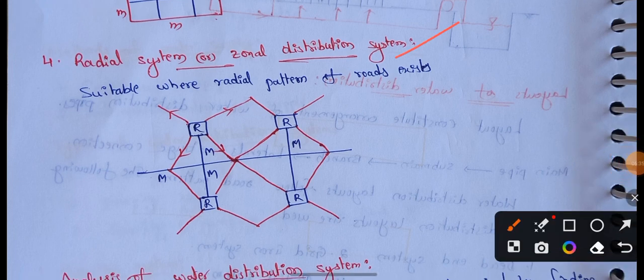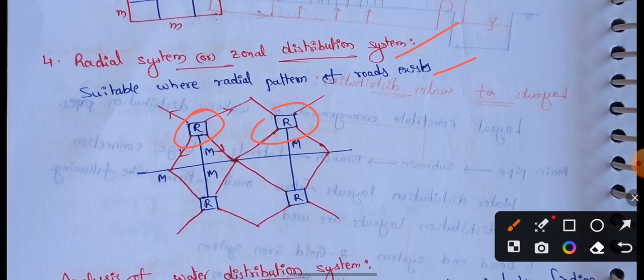Fourth, the radial system. This is used where radial patterns of roads exist. The area is divided into small distribution zones, and in the center of each zone a distribution reservoir is provided. Each zone has a small reservoir to supply water radially outward.